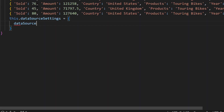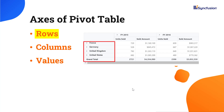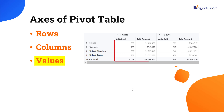I set the DataSource property of DataSourceSettings to the PivotData. To show the DataSource, I need to add three major axes: rows, columns, and values in DataSourceSettings. PivotViewRows are a collection of fields displayed in the row axis. PivotViewColumns are a collection of fields displayed in the column axis. PivotViewValues are a collection of fields that have aggregated numeric values.